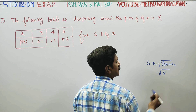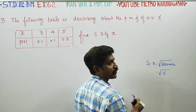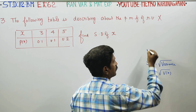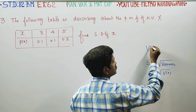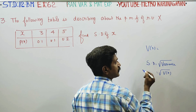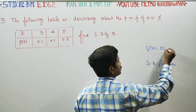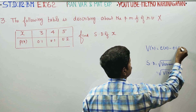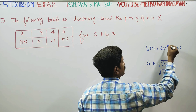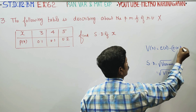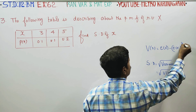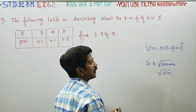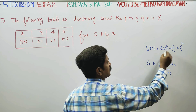To find variance: variance is found using expectation of X minus expectation of X, whole square. To find variance, we need to find expectation of X and expectation of X squared.